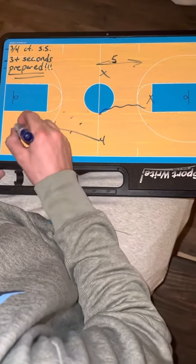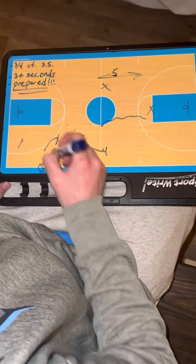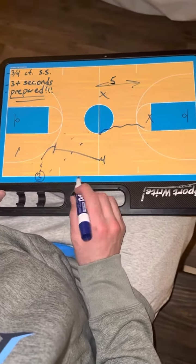Right here, you can do this as a safety as well, but this is a three-quarter court. Two is going to screen for one, set their defender up, come back right there. It's kind of like more of a safety.